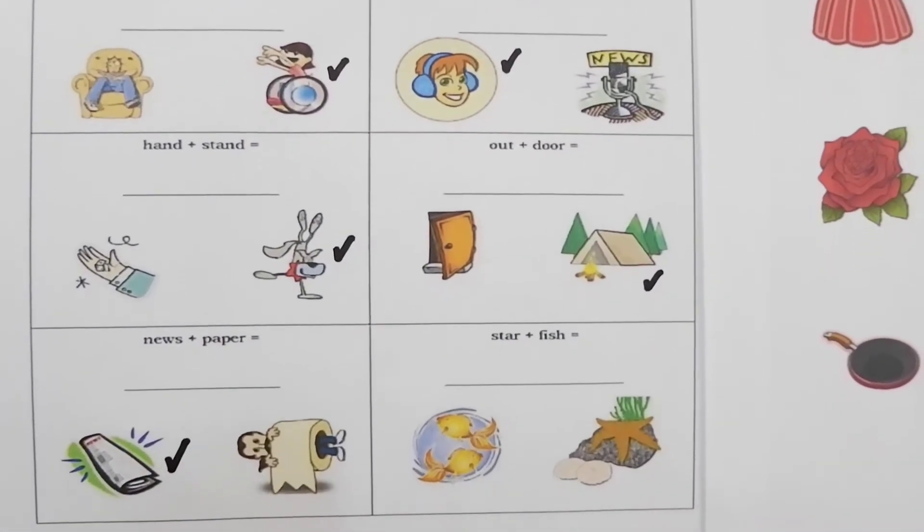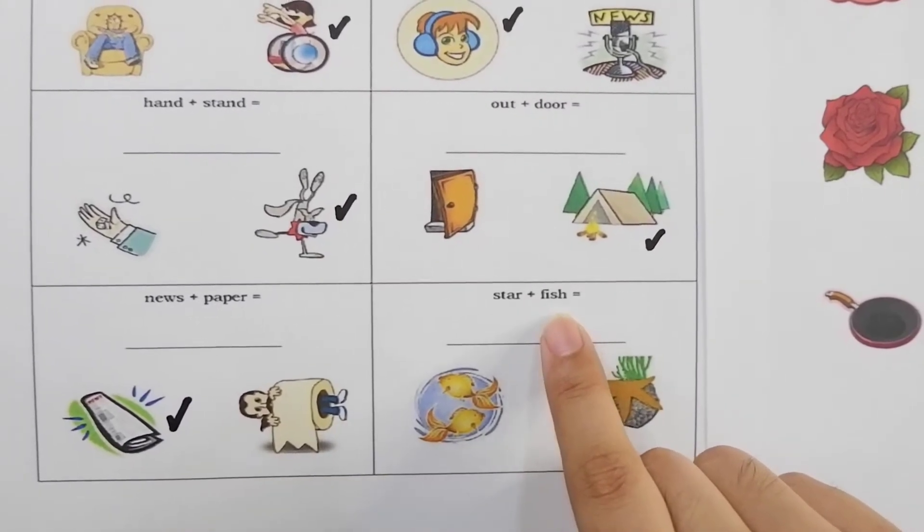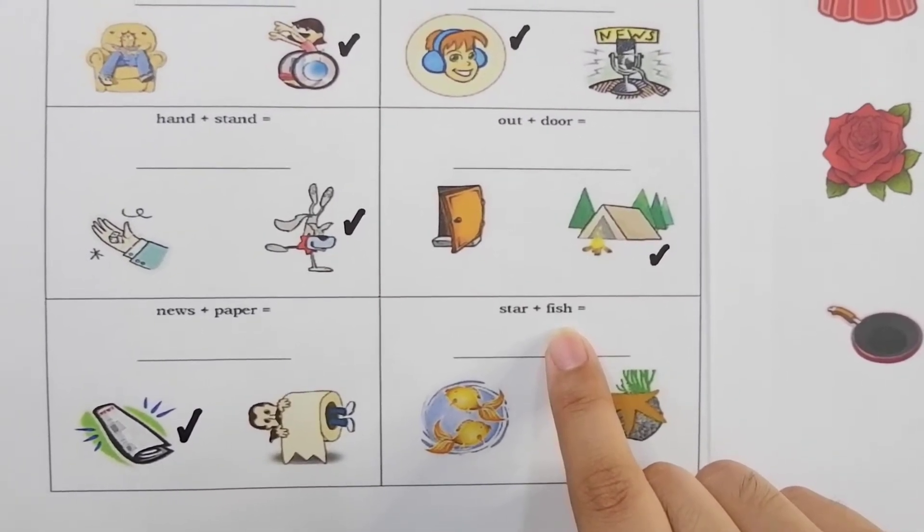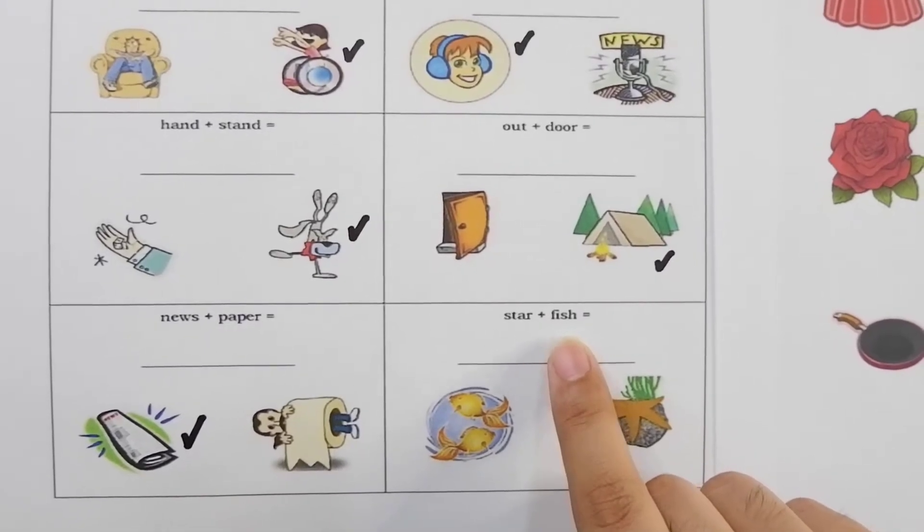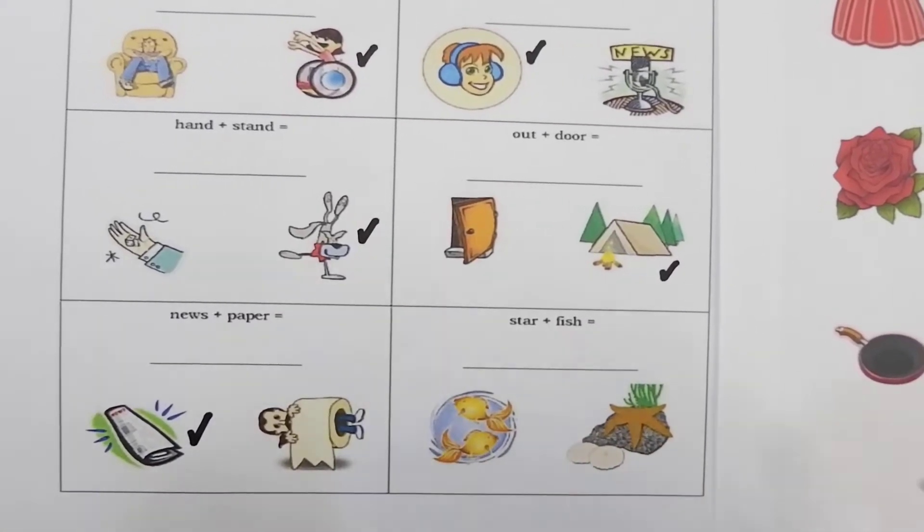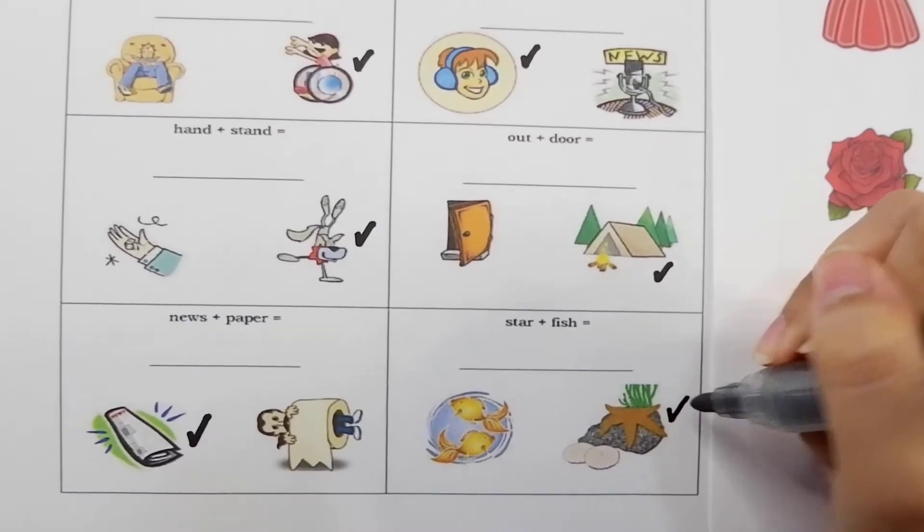Next example chameleons is star plus fish. Oh I'm sure you already know this. We get starfish. Look, it's so nice.